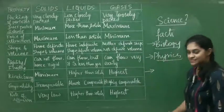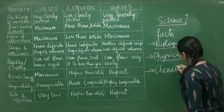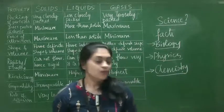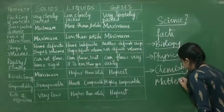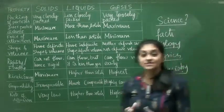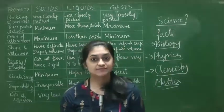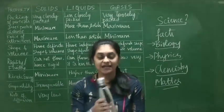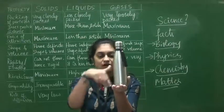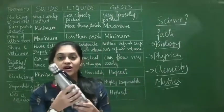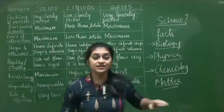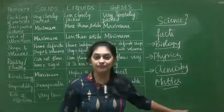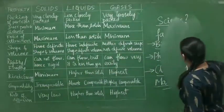Another field of science is chemistry. What is chemistry? Chemistry is study of matter. What is matter? Matter is anything that occupies space and has mass. For example, let us take this water bottle — it is having some mass and it is occupying some space. So we can call this a matter. So chemistry is study of matter.